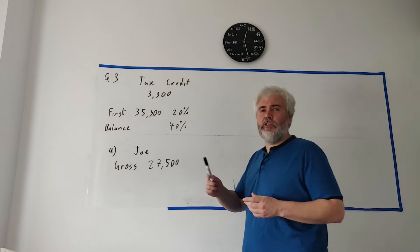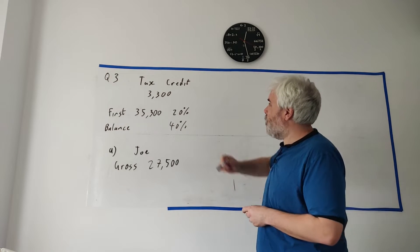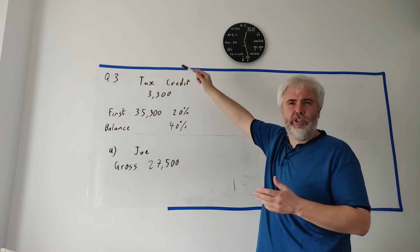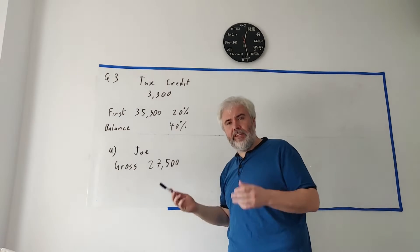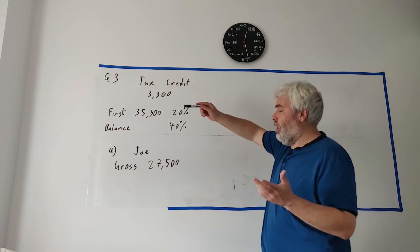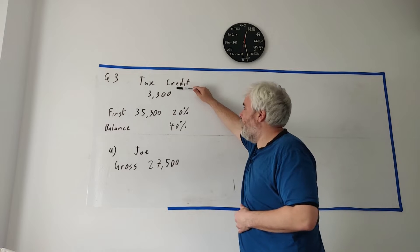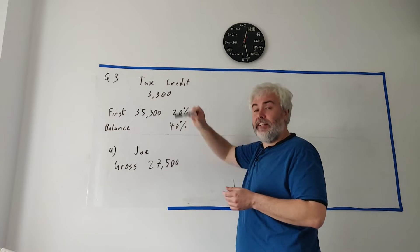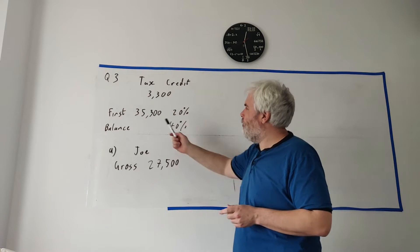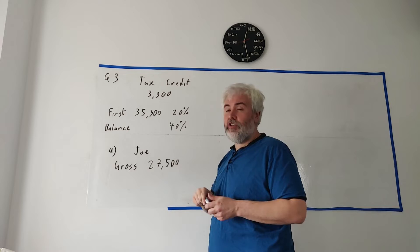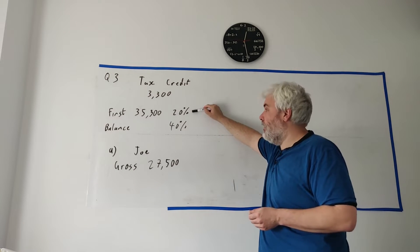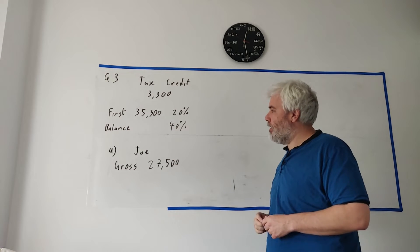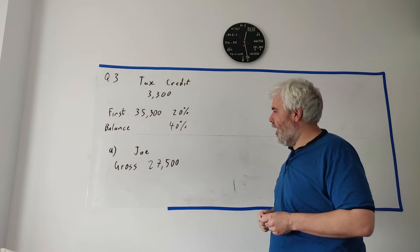Question A: First of all they give us lots of information. Tax credits - everyone's tax credits are 3,300. These numbers change depending on whether you have kids, where you live, different things. But all these three people have tax credits of 3,300. So we work out someone's tax and then we take this number away from it. The first 35,300 everyone earns is going to get taxed at 20% balance. That means everything else, the rest is going to be taxed at 40%. So part A asks us about Joe.